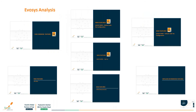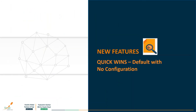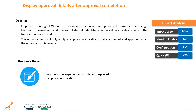Moving to new features - quick wins default with no configuration. The first is display approval details after approval completion. Employees, contingent workers, or HR admins with access to change personal information can view all current and proposed changes after the approval transaction is completed. Note that approvals set up before this release will not have this functionality - only new approvals configured after this release will have this leverage. This improves user experience and makes users' day-to-day life easier.